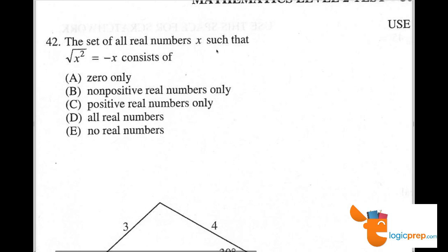Number 42, the set of all real numbers x, such that the square root of x squared equals negative x consists of,